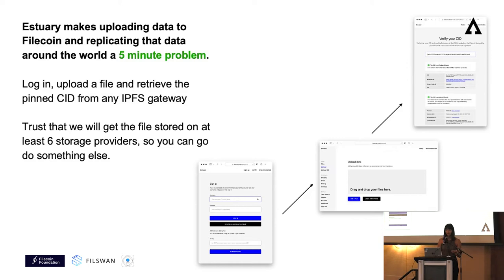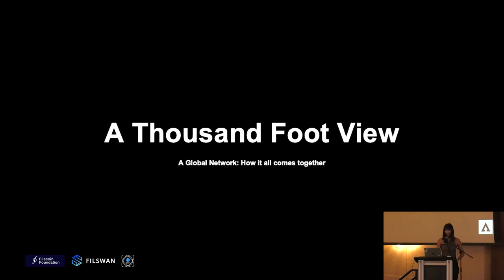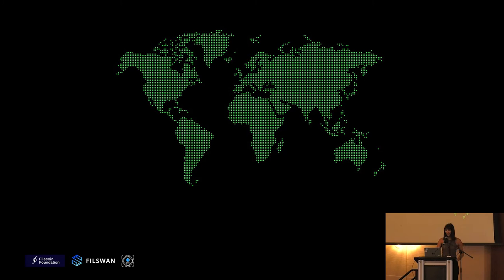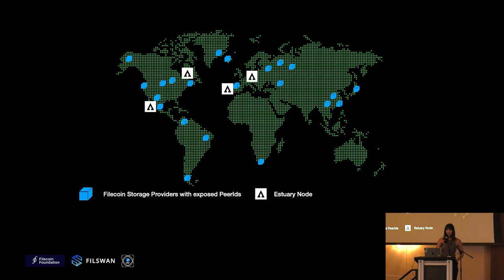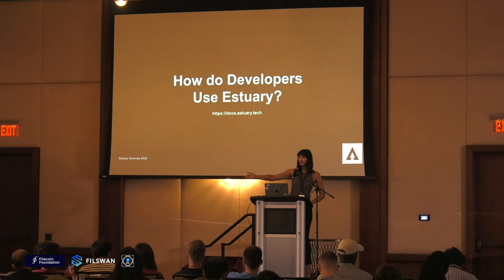In a centralized model you only have a few data centers, but that's no longer a problem — you can just go onto the network and ask from anyone there. There's a visual representation showing how this can populate across the world: here are the Filecoin storage providers, Estuary talks to the storage providers, and you can see deals being made replicating more and more. You have access everywhere.